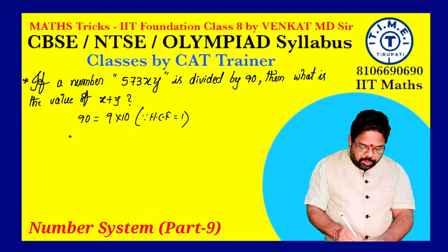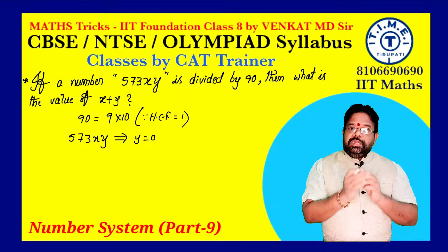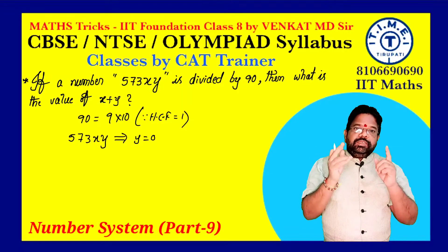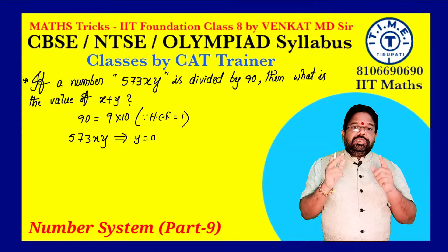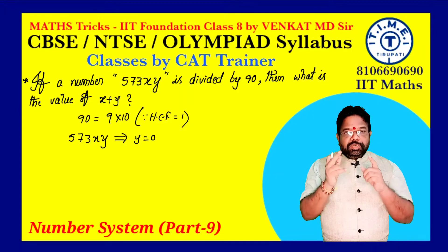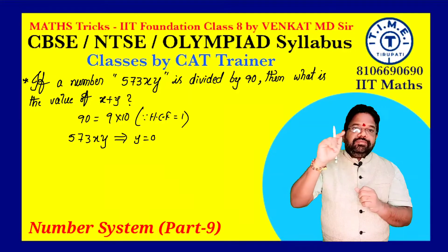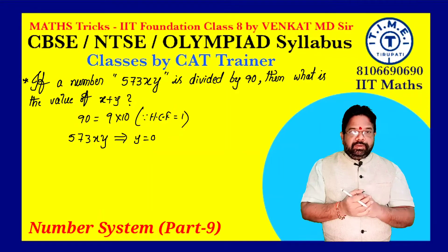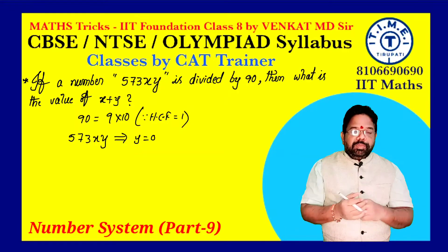In 573xy, Y is 0. Now we have to calculate the value of X. One more condition: that number must be divisible by 9 also. What is the divisibility test by 9? The sum of the digits of the given number must be exactly divisible by 9.